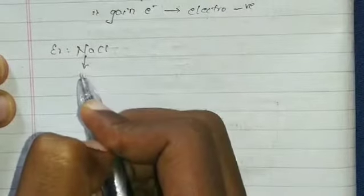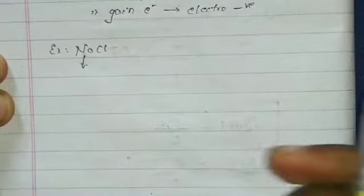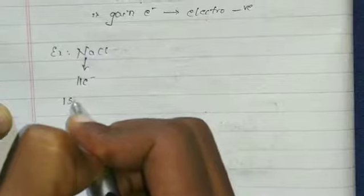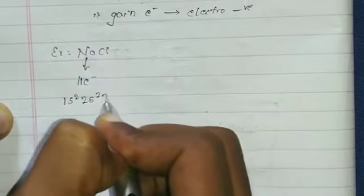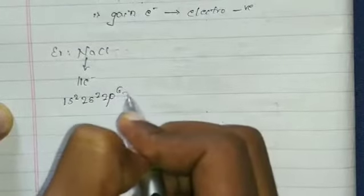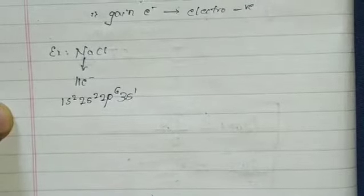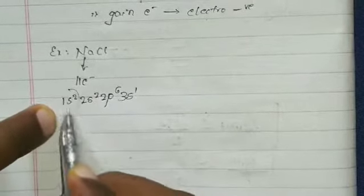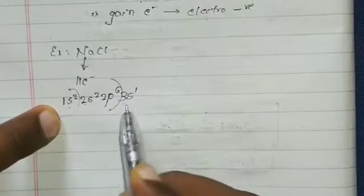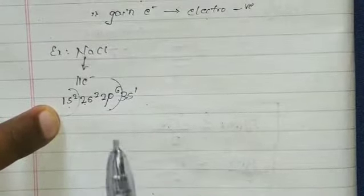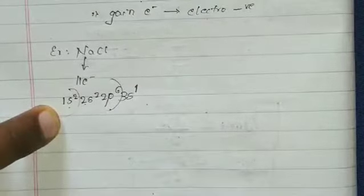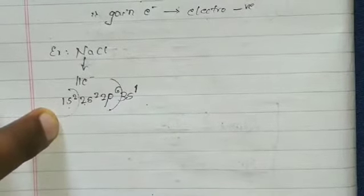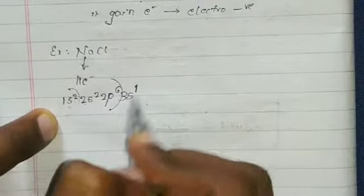Sodium has 11 electrons. Its electronic configuration is 1s², 2s², 2p⁶, 3s¹. That means in the outermost shell there is one electron. This means Na is unstable — it has only one electron in its outermost shell.